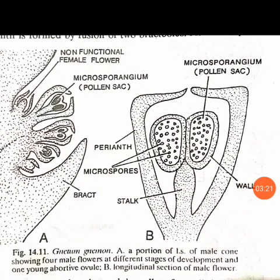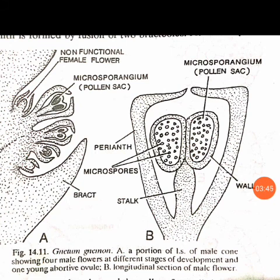Each anther with a single locule is filled with many pollen grains. As seen in Figure B, the microspores or pollen grains are enclosed within a microsporangium, which is referred to as the locule — the chamber that carries the microspores. Many microspores or pollen grains are present within these two microsporangia or locules. This completes the structure of the male flower.